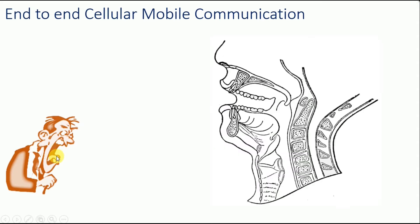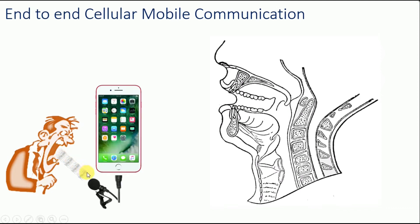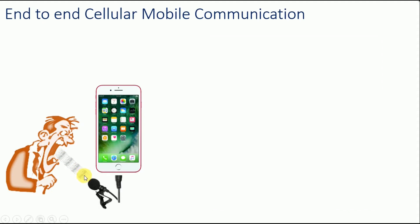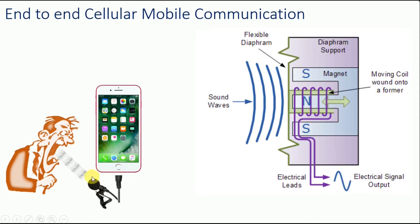The terminal end of our network is basically a person who is trying to communicate over the air to another person. The vocal cords generate an acoustic signal, which is nothing but vibration in the air molecules. These air molecules and their vibrations are incident on the microphone. So the first task that the cell phone does is convert an acoustic signal into an electrical signal, and this is done by means of a transducer.